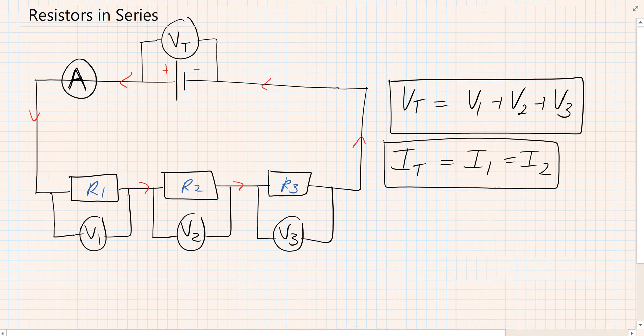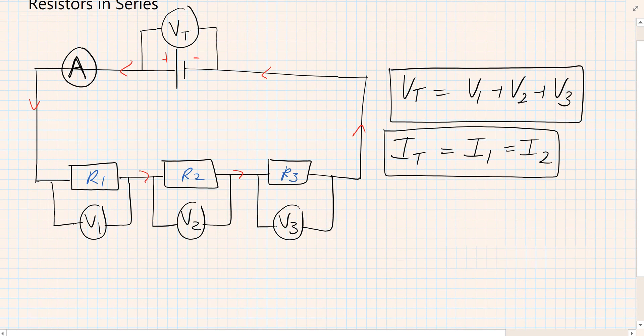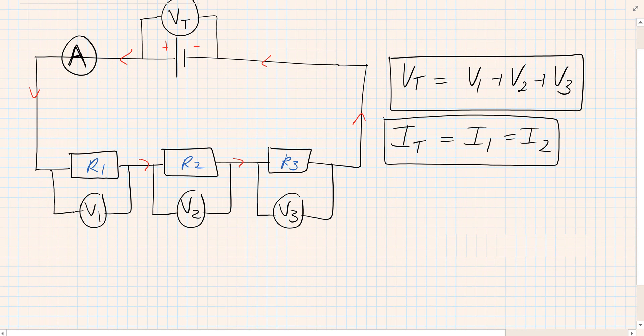Those two rules are important because when we use Ohm's law to figure out what's going on, we know that V1 would be I times R1, V2 would be I R2, and V3 would be I R3.